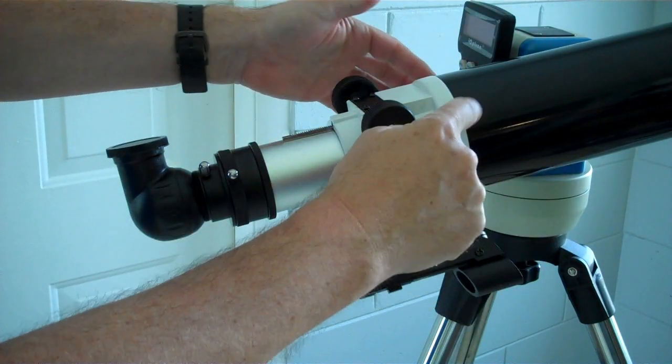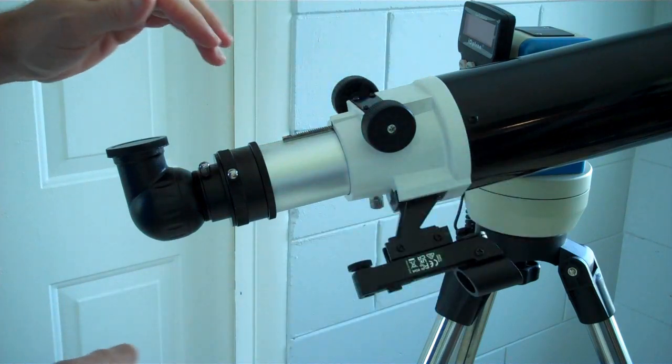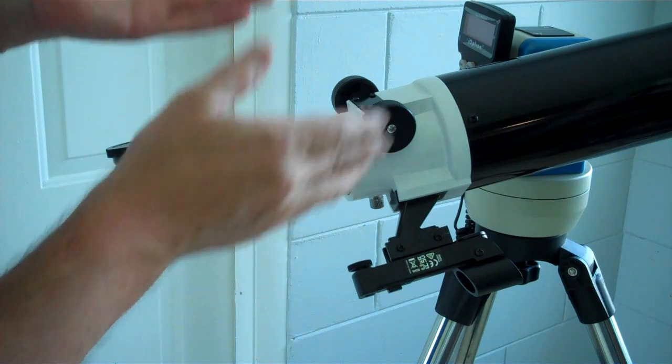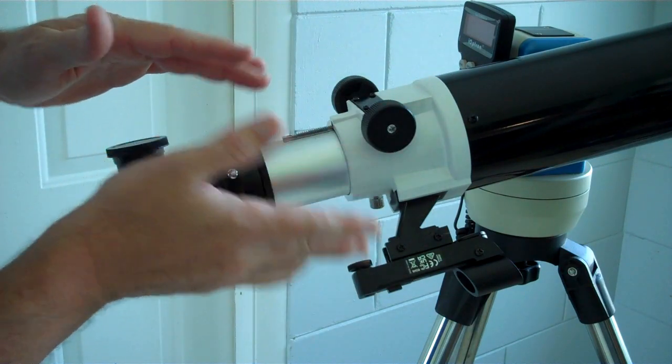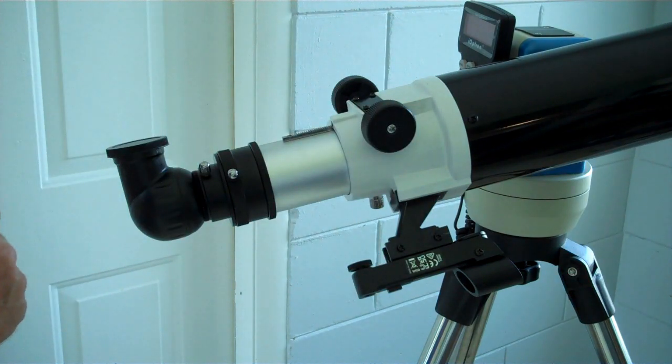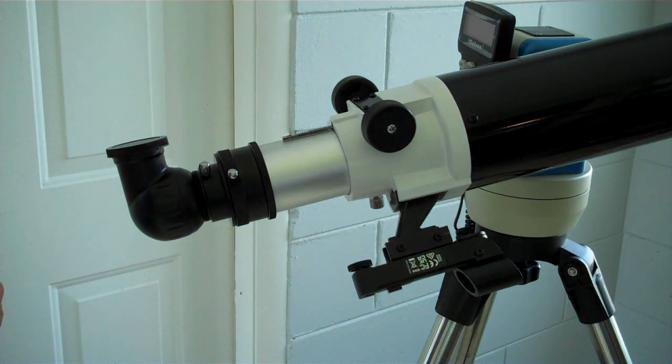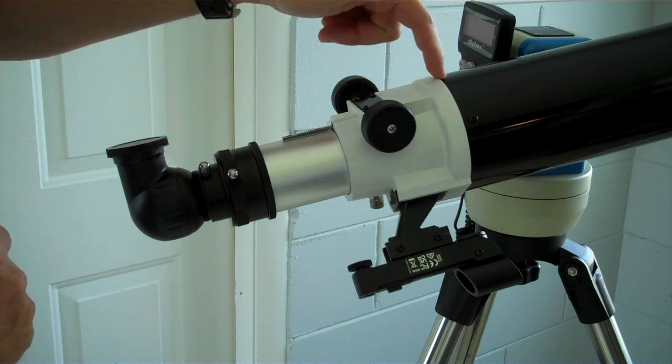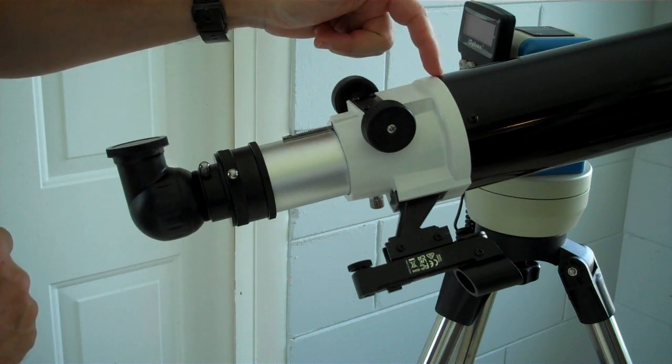It's just held onto the tube with these three screws here. Now if there were four screws, I could take the screws out, rotate 180 and screw them back in. With three screws, I can go 120 or 240 but I can't get it exactly right. So what I'm going to do is have to drill some new holes. I thought about drilling three new holes in the tube, which would be pretty easy.